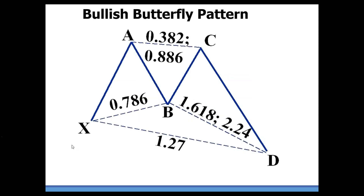Here's a bullish butterfly. We look at this M-formation starting at our X-point with an AB followed by a C-point. That C-point cannot exceed the A-point — that's the definition of an M-formation. The B-point is at that precise .786, much tighter than other extension patterns like the crab or deep crab. This B-point has to be at a 3% confidence interval, plus or minus 3%, so this could be 75% or as much as 81% on the top side.